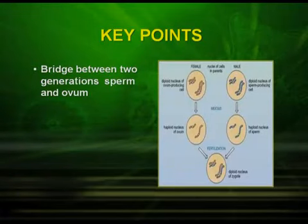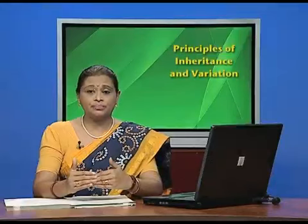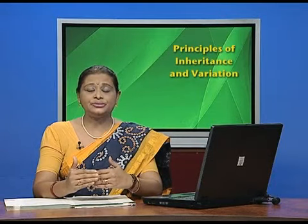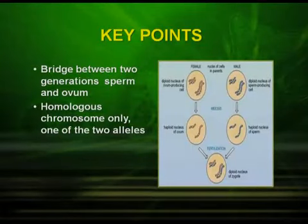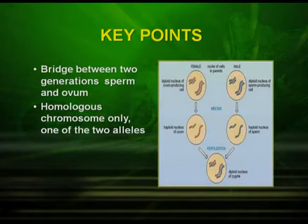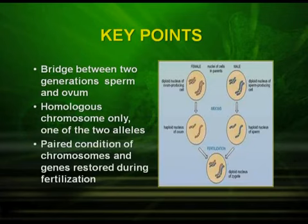Now let us start with the chromosomal theory of inheritance. The first very important point is the bridge between the two generations — the sperm and the ovum. The sperm and the ovum bridge two generations, and they are produced by the diploid organism — the female producing the ova and the male producing the sperm. The gamete contains one homologous chromosome, while diploid organisms have two homologous chromosomes. The paired condition of the chromosomes is restored during fertilization.